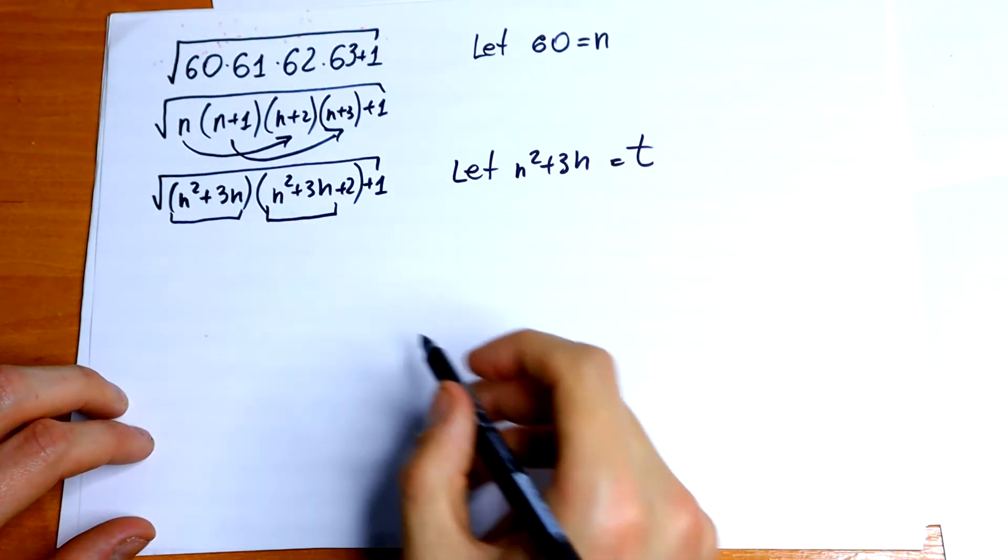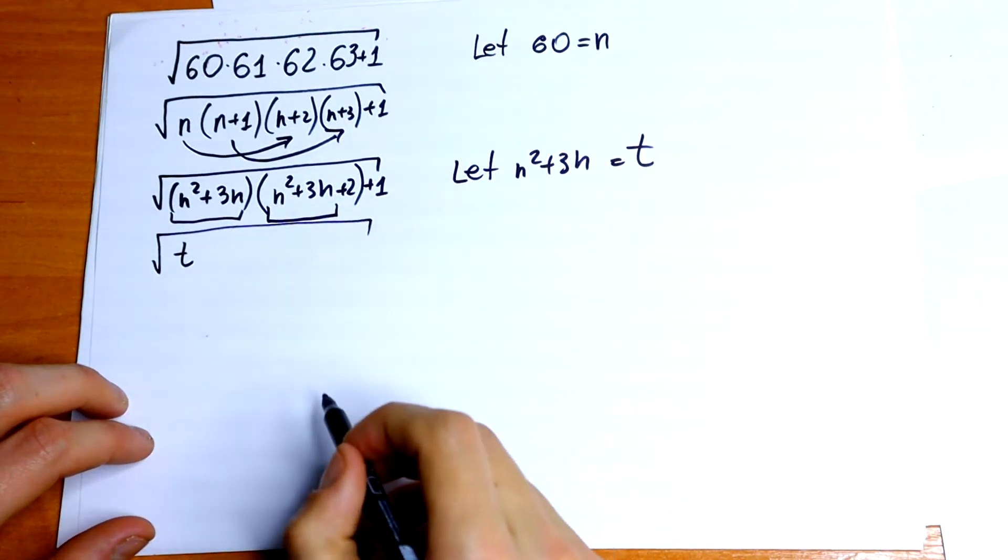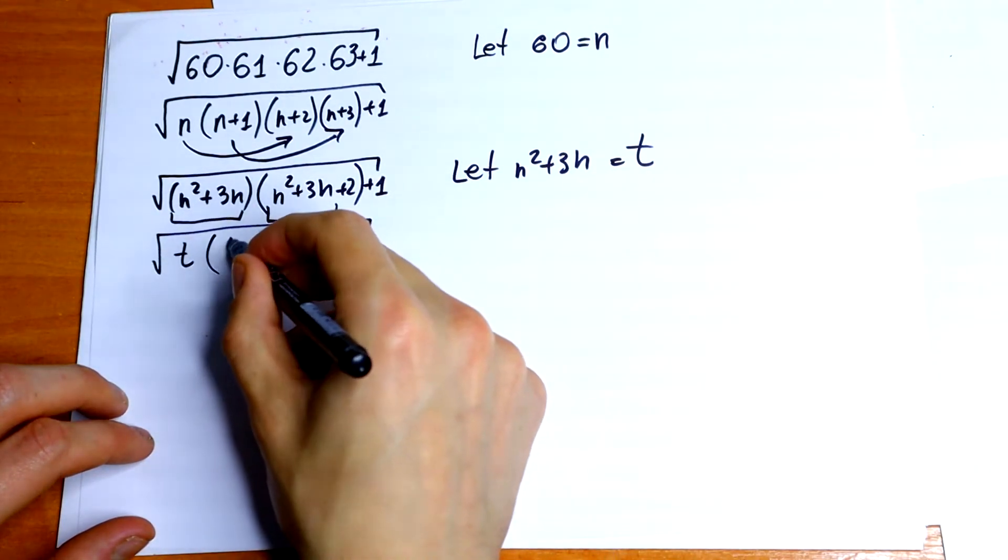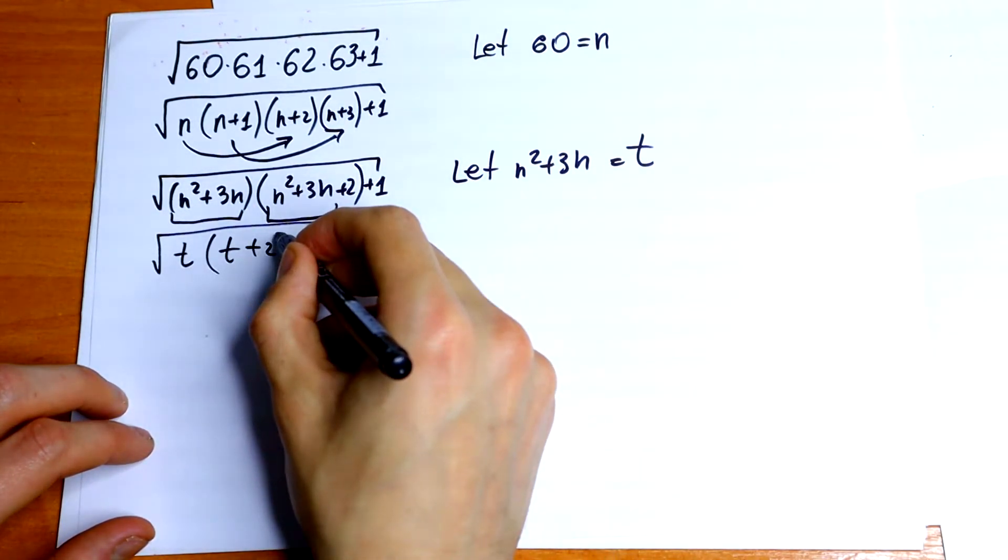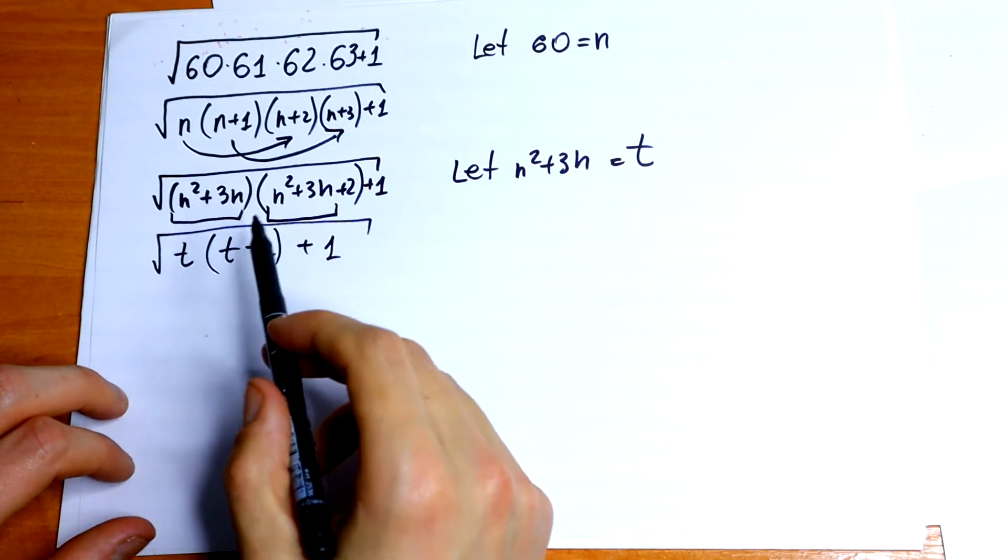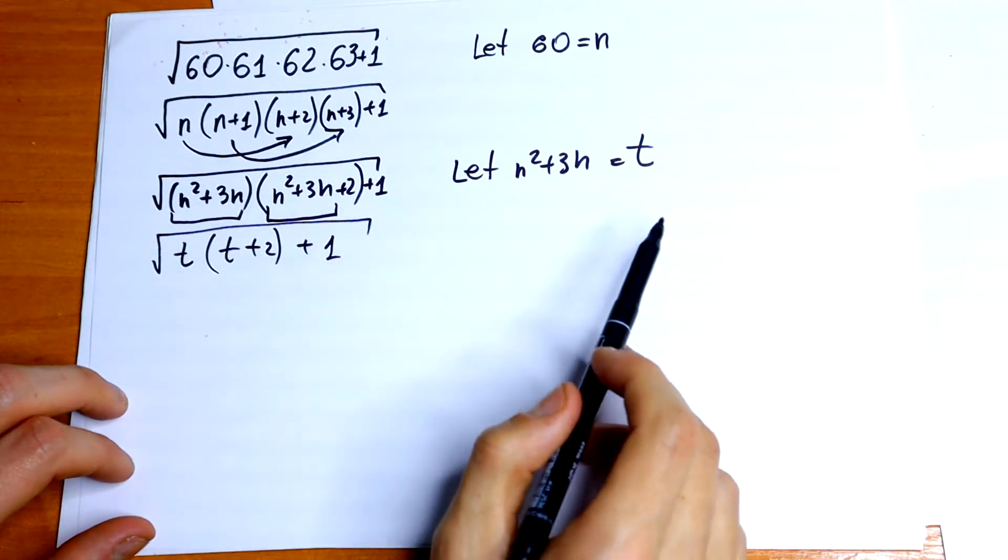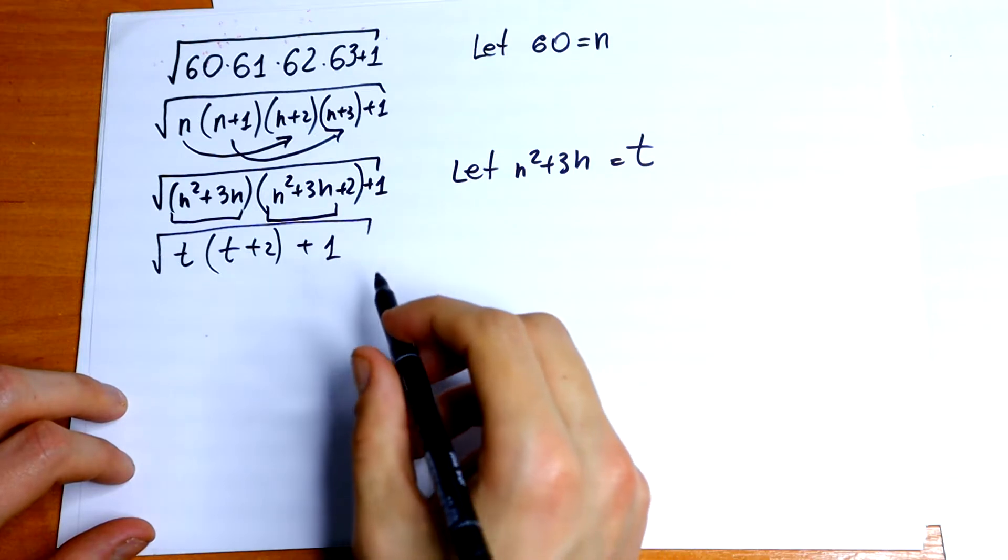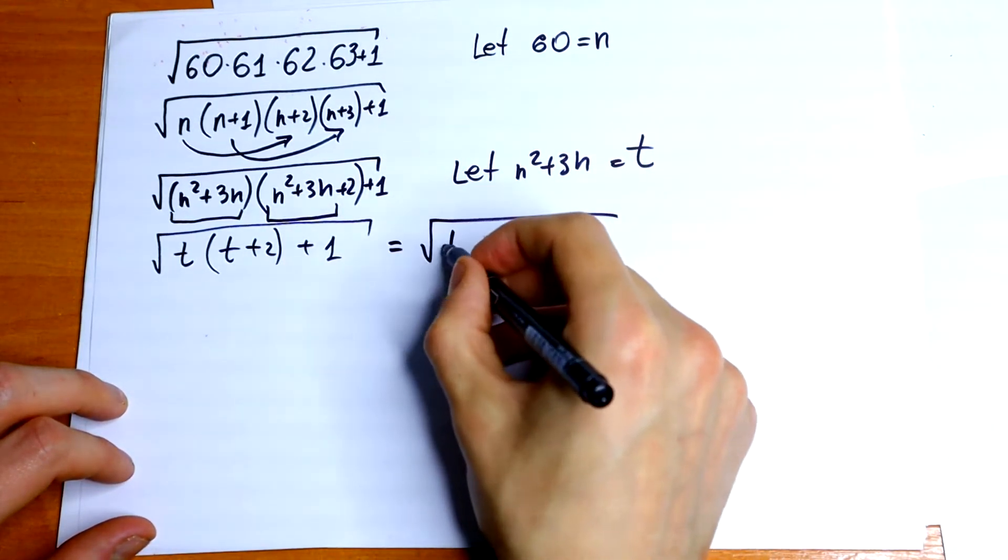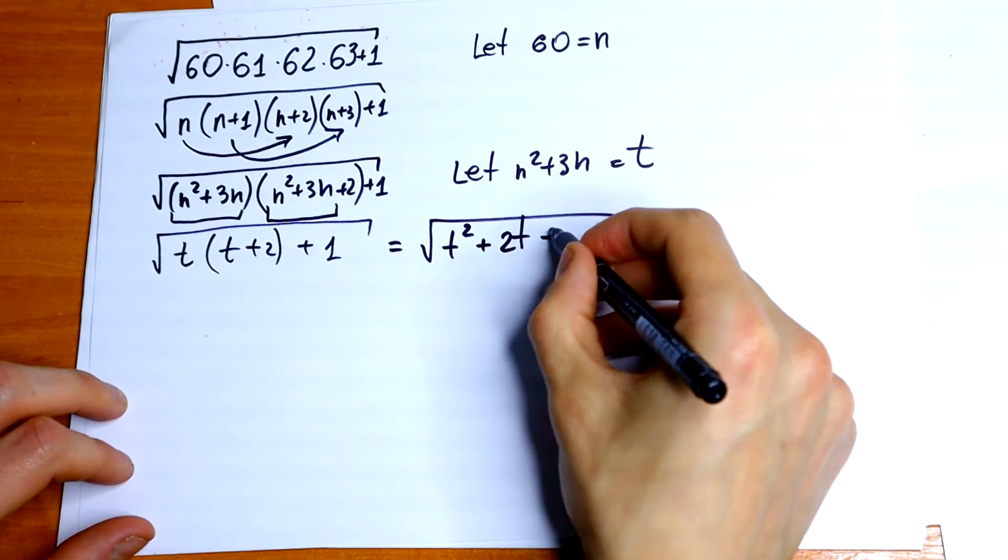So we will get square root t times t plus 2 and plus 1. Just substitute this n square plus 3n by t. Let's multiply this. We will get square root t square plus 2t and plus 1.